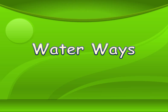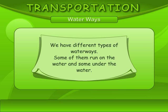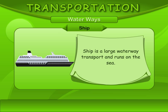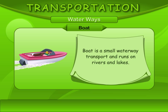Waterways. We have different types of waterways. Some of them run on the water and some under the water. A ship is a large waterway transport and runs on the sea. A boat is a small waterway transport and runs on rivers and lakes.